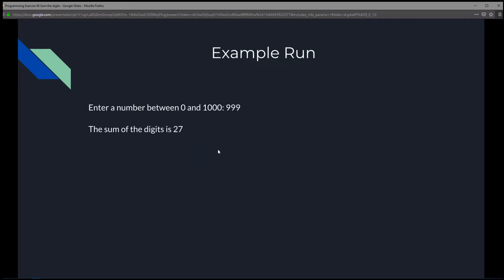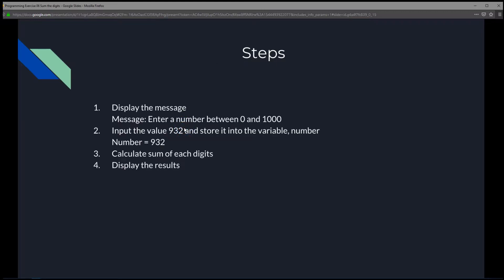When we run this on the console, it's going to ask the user to enter a number between 0 and 1000. The user could enter a number like 999, and behind the scenes the program will do the calculation and output the result. The sum of the digits is 27 because 9 plus 9 plus 9 is 27.